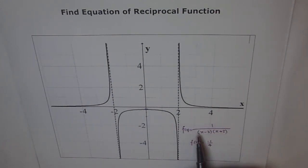So, we say that our equation for the reciprocal function should be f of x equals to 1 over x minus 2 times x plus 2.